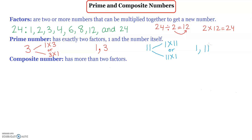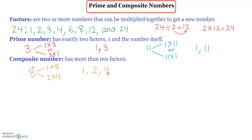Composite number. A composite number has more than two factors. For example, 8 is a composite number because I can say 1 times 8 is 8, 2 times 4 is 8, 4 times 2 is 8, and 8 times 1 is 8. Therefore, the factors of 8 are 1, 2, 4, and 8.